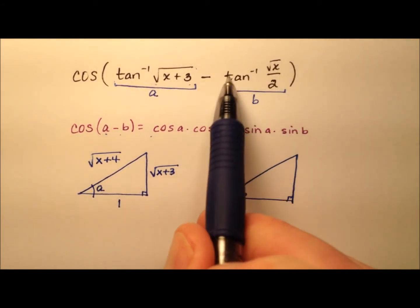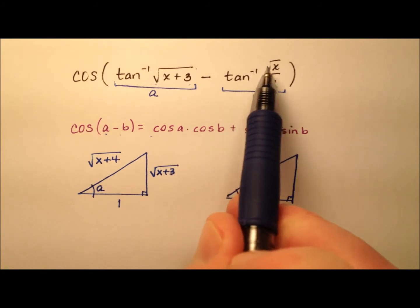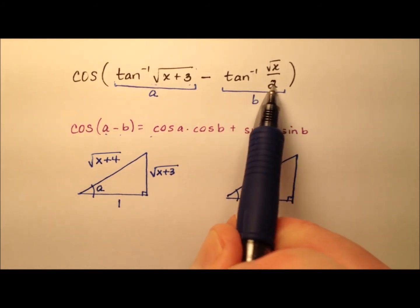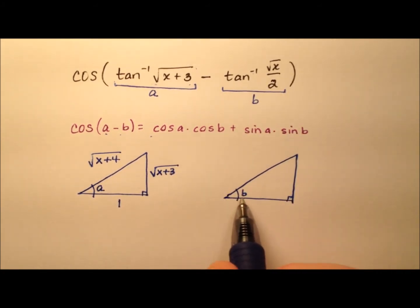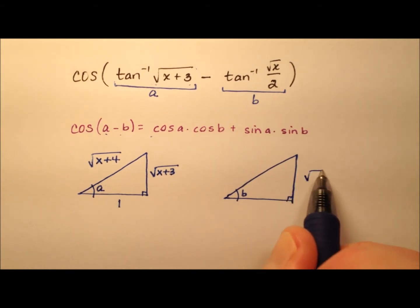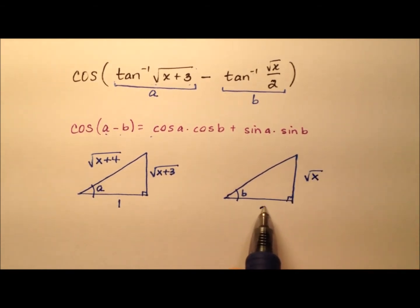So angle B. We know angle B is going to be the inverse tangent of the square root of x over 2. So once again, tangent is opposite, the square root of x, over adjacent, which is 2.